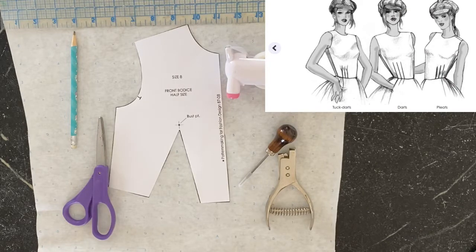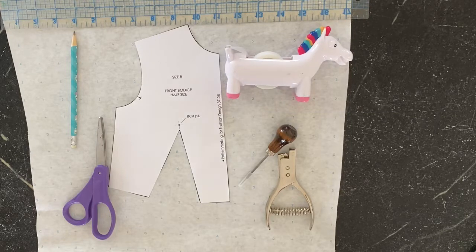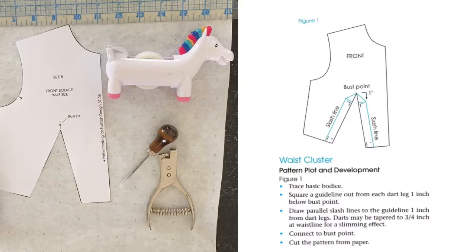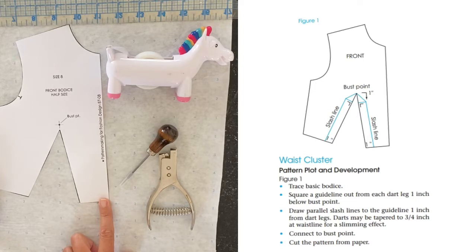The name of this technique is dart clusters and dart equivalents. Step one is to trace the basic bodice. It's in the back of your book. I just printed out a photocopy and cut it out. Then they want you to square a guideline out from each dart leg one inch below the bust point.